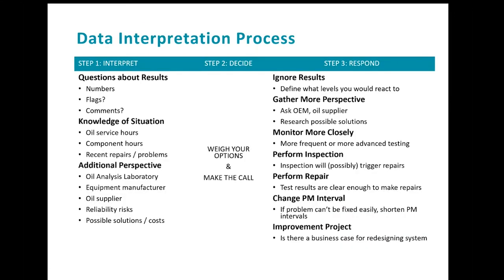Before we get started, let's talk about the data interpretation process. It can be broken up into three parts. The first is the interpretation of the results — reviewing what has been flagged, reviewing the hours on the oil or component, and looking into recent repairs or issues, then getting additional perspective from the lab, the OEM, the oil supplier, and other sources to determine how to react. Next, you take this information and decide how or if you're going to react — you make the call. This leads to your response ranging from not doing anything, to monitoring more closely, or even creating an improvement project.